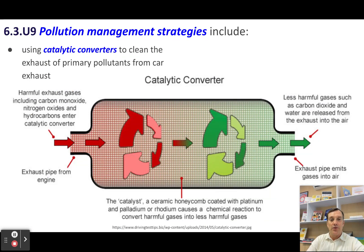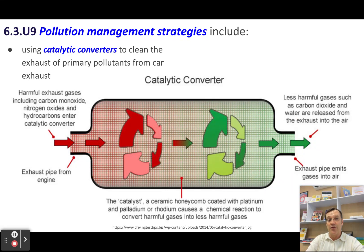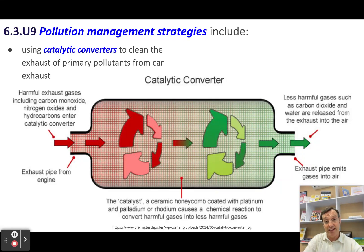Catalytic converters are devices that go into the exhaust system of vehicles. They have a fine mesh of heavy metals that will trap a lot of the primary pollutants, reducing the amount of primary pollutants entering the atmosphere. It doesn't eliminate them — so it's not tier one — but it reduces them, so it's tier two.